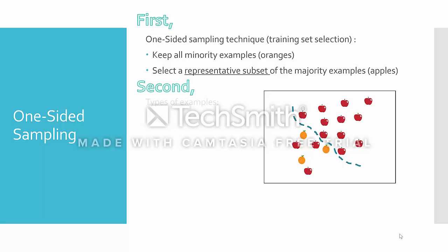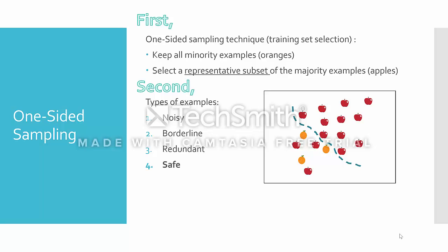Second, there are four types of examples in a set: those that are considered noise, like the apple in the bottom left corner; borderline examples that are close to the decision surface; those that are redundant, meaning they could be represented by other instances; and finally, safe examples — those that matter the most.